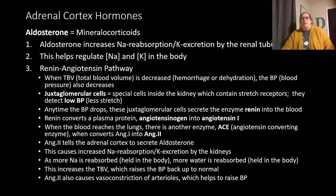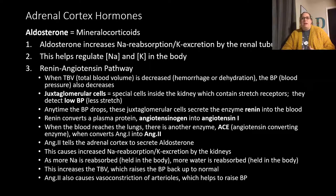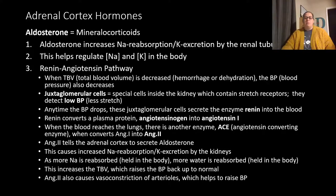Aldosterone increases sodium reabsorption, which causes potassium excretion to increase. As more sodium is retained, water — which is attracted to sodium — is also retained, increasing total blood volume and raising blood pressure back to normal. Angiotensin II also causes vasoconstriction of arterioles for a short-term blood pressure fix, while sodium and water retention provides a longer-term solution until the underlying hemorrhage or dehydration is addressed.